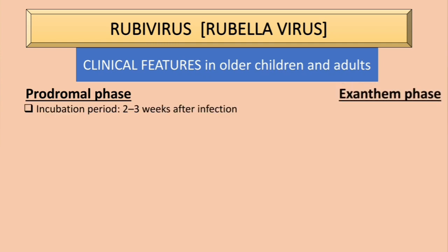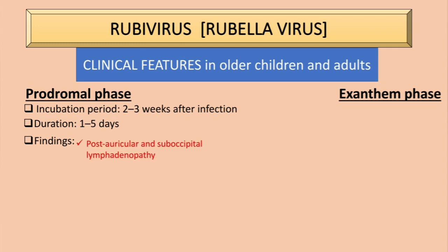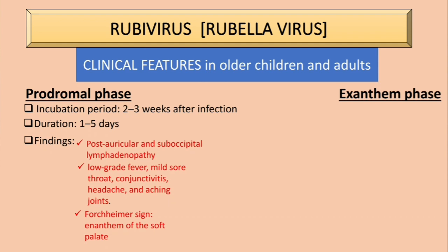In older children and adults there are two main phases: the prodromal phase and the exanthem phase. The prodromal phase has an incubation period of two to three weeks after infection and lasts one to five days. Findings include: post-auricular and sub-occipital lymphadenopathy; low-grade fever, mild sore throat, conjunctivitis, headache, and joint pain; and the Forchheimer sign, which is an enanthem — a mucosal rash — of the soft palate.